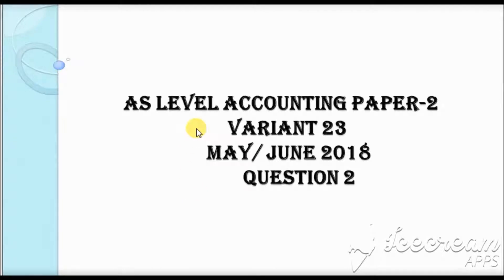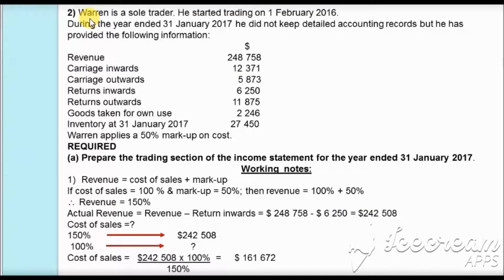Hello and welcome to this video. In this video we are going to do an AS level question from paper 2 variant 23, May June 2018, question 2 based on incomplete records. The question states that Vyan is a sole trader. He started trading on 1st February 2016. During the year ended 31st January 2017, he did not keep detailed accounting records but has provided the following information.